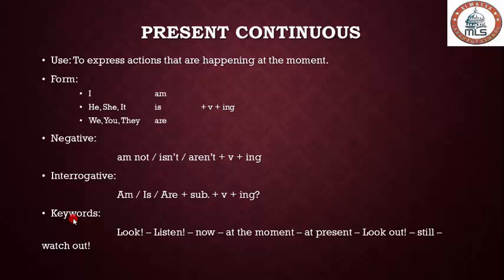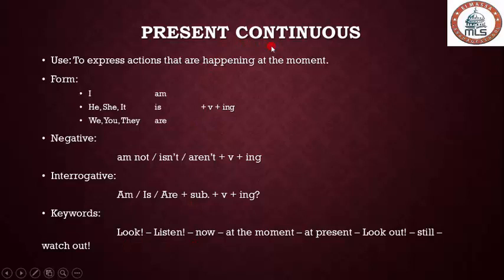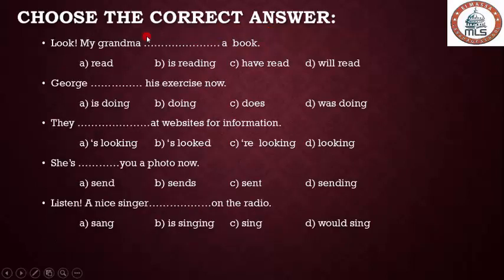Key words are very important — these words refer to present continuous. If you find in the sentence: 'look,' 'listen,' 'now,' 'at the moment,' 'at present,' 'look,' 'watch out' — all of these words signal present continuous. Let's practice: choose the correct answer. 'Look! My grandma ___ a book.' 'Look' is a keyword that refers to present continuous.